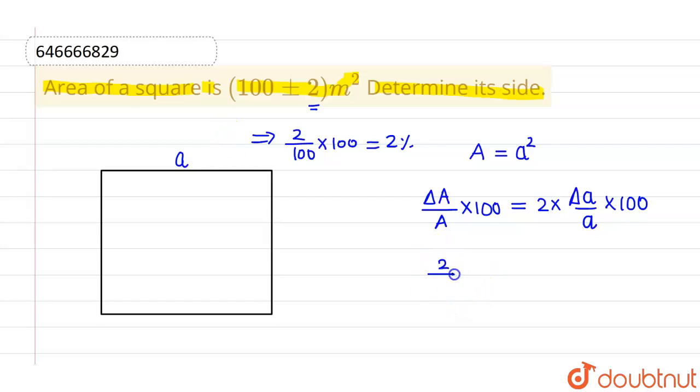That means delta A2 divided by area which is 100 into 100, that comes out to be 2% and that will be equals to 2 times of percentage error in side. So from here, I will be getting percentage error inside equals to 1%.